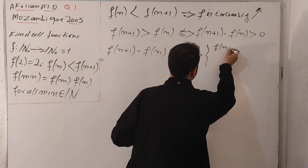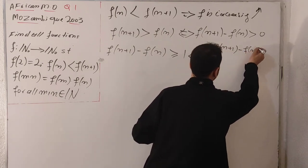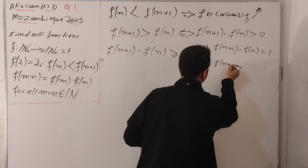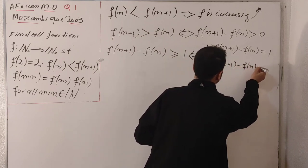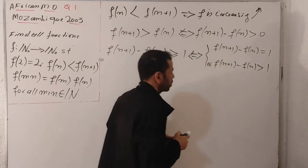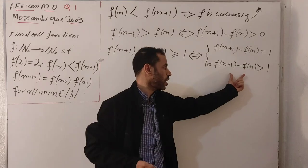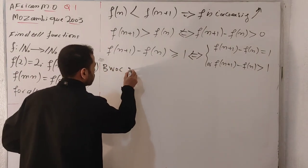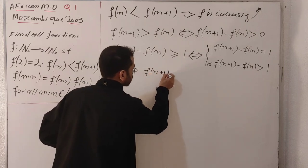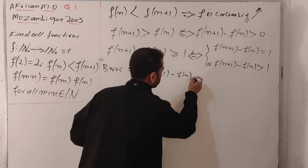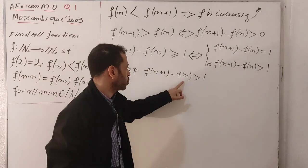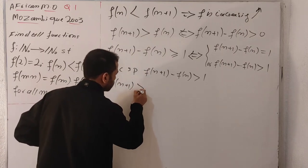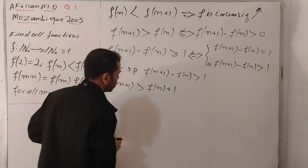This is equivalent to saying either f(n+1) − f(n) = 1, or f(n+1) − f(n) > 1. I'm going to rule out the second possibility by contradiction. Suppose f(n+1) − f(n) > 1; then f(n+1) ≥ f(n) + 2.